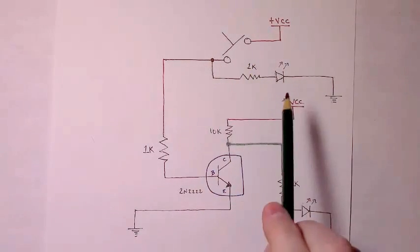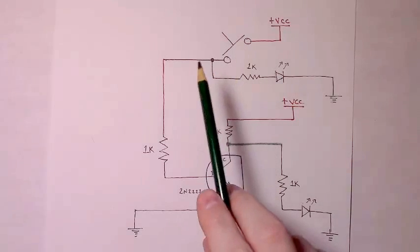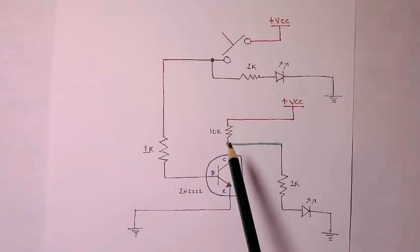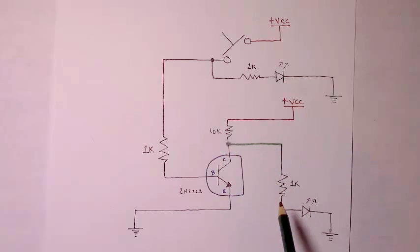our input indicator LED turns on, but also current sent through the 1K to the base of our NPN transistor. That gives current coming from VCC through the 10K a fork in the road. It could take the path through the 1K to the output LED,